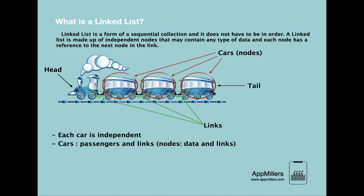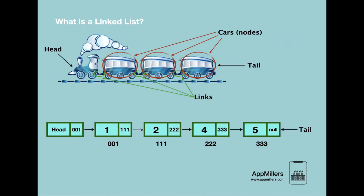Of course, there are some properties of trains which do not match with linked list. For instance, the train compartments are contiguous, meaning they are physically next to each other, but the linked list in memory is not contiguous — the nodes of a linked list are not contiguous. In computer science, the linked list looks like this structure here.